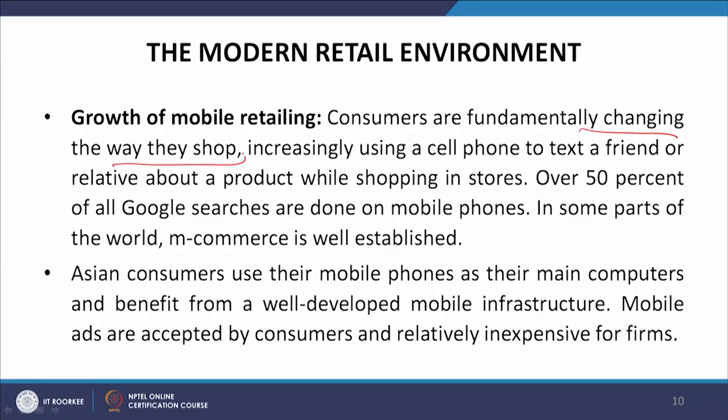Another change in the retail environment is the growth of mobile retailing. Consumers are fundamentally changing the way they shop, increasingly using a cell phone to text a friend or relative about a product while shopping in stores. Over 50 percent of all Google searches are done on mobile phones. In some parts of the world, M-commerce is well established. Asian consumers use their mobile phone as their main computer and benefit from a well-developed mobile infrastructure. Mobile ads are accepted by consumers and inexpensive. Interactive store aisles provide a wide range of products and brand images superimposed on the walls, and consumers can now order products for home delivery by simply snapping photos with their phones.